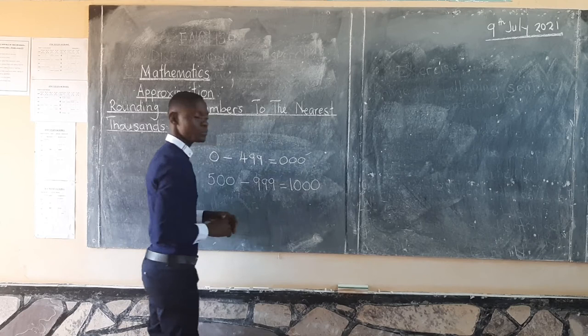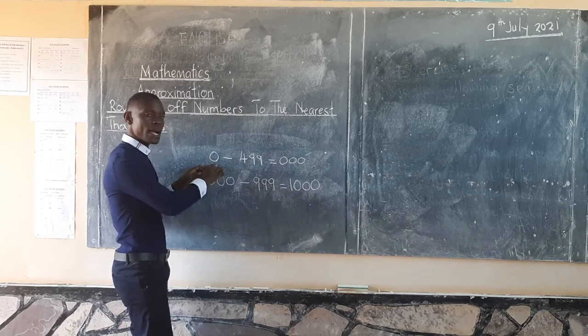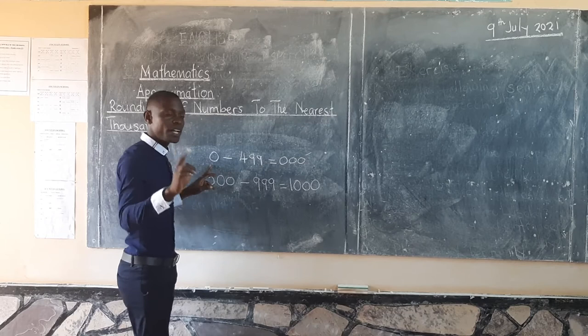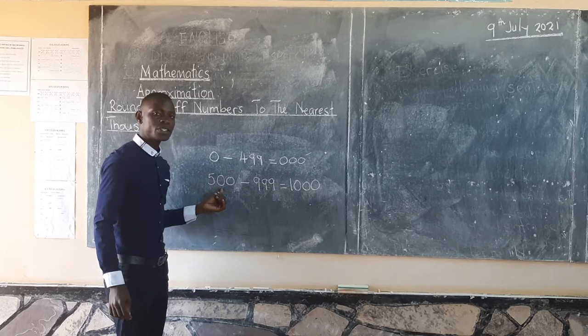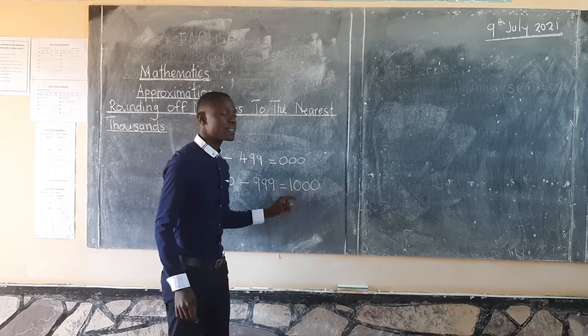So to recap: numbers with last 3 digits between 0 to 499 have a value of 000. Numbers with last 3 digits between 500 to 999 have a value of 1,000. To understand these steps, we need to look at examples.